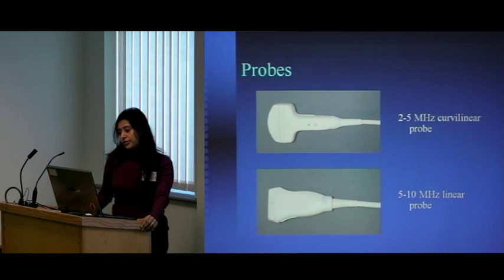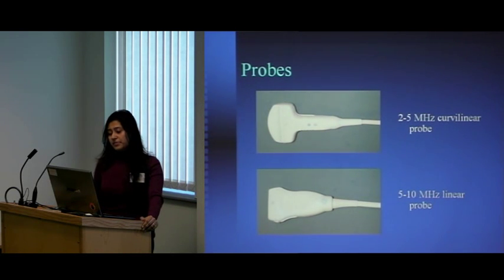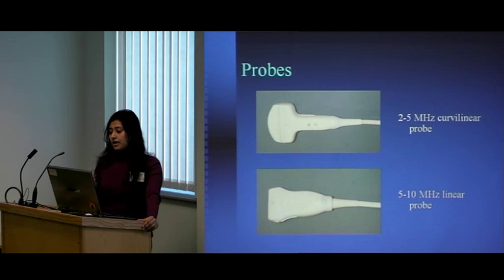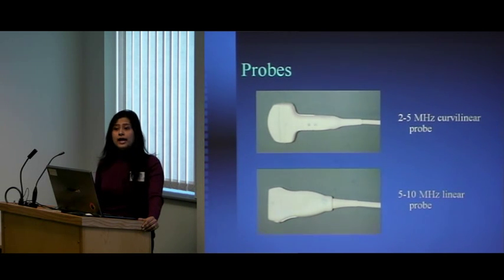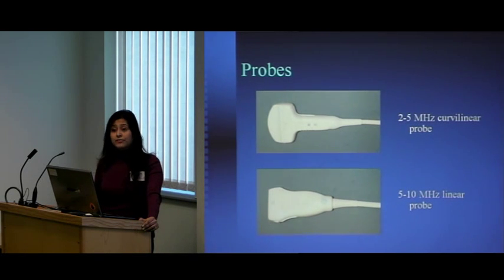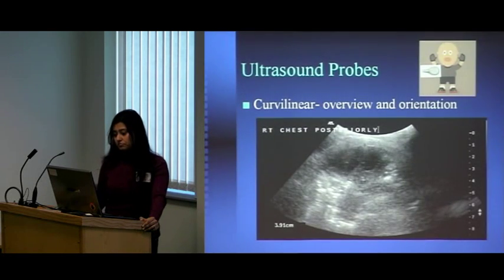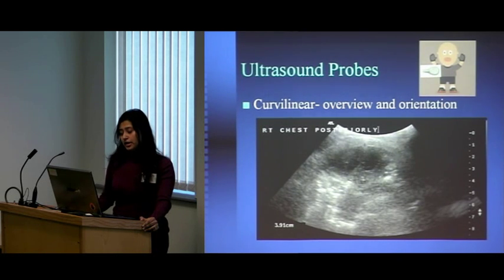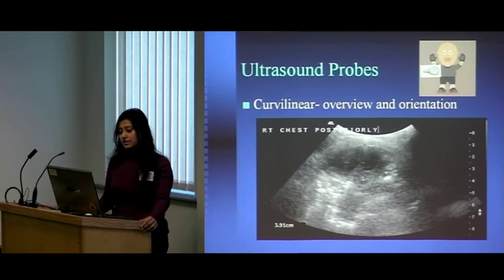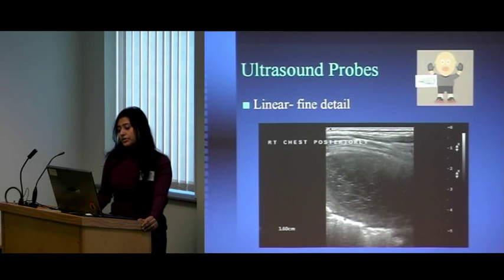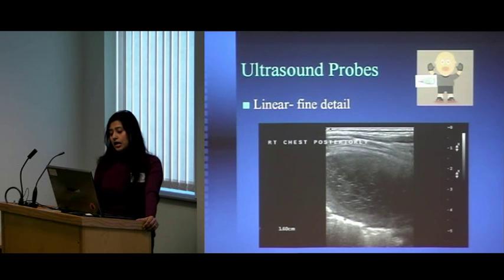These are the probes: the first is the 2 to 5 megahertz curvilinear probe used commonly. Because it has lower frequency you can see deeper structures, and the sector scan allows a wide field of view through a narrow acoustic window. The second probe, the higher-frequency linear probe, is used to look at the chest wall or pleura in more detail. With the curvilinear probe you can see an effusion with some echogenic material, but with the linear probe you can see more detail, including echogenic septations, loculations, and particles.